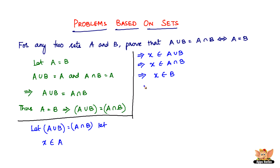From this, we can conclude that A is a subset of B, because X belongs to A and X belongs to B as well. Therefore, A is a subset of B.